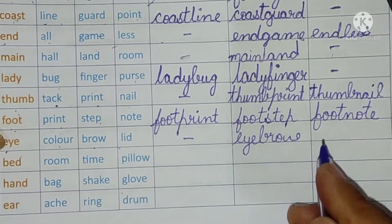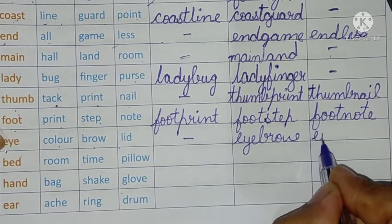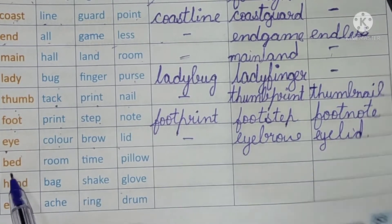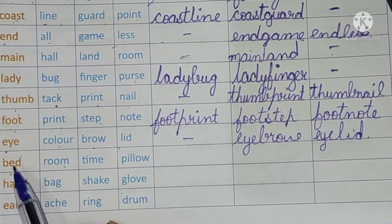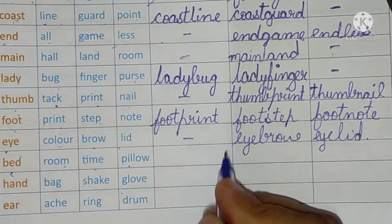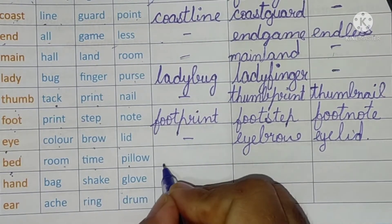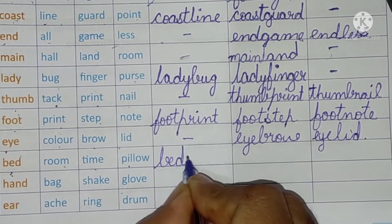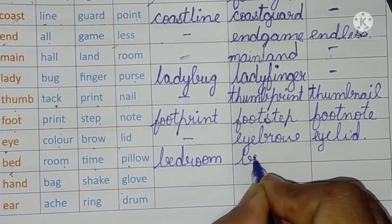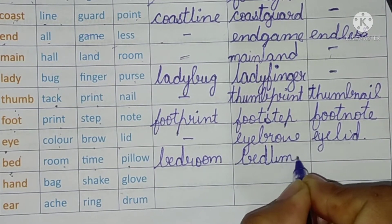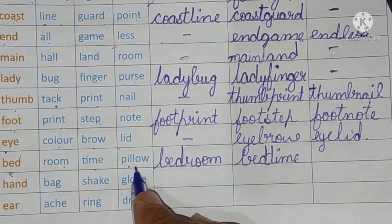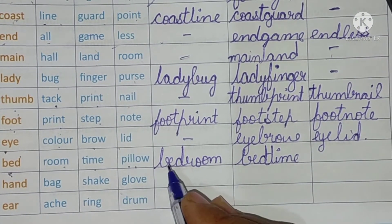Next is 'bed': bedroom, bedtime, or bed pillow. Bedroom — yes. Bedtime — yes. Bed + pillow — no, it does not give a meaningful compound word, so we leave that blank.